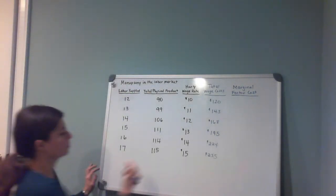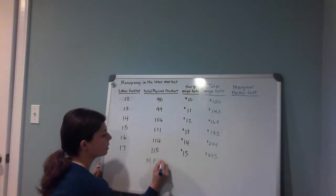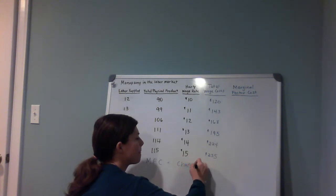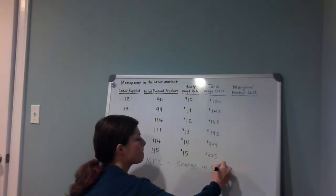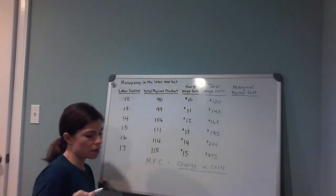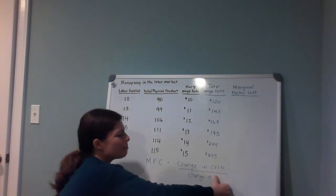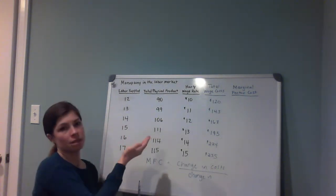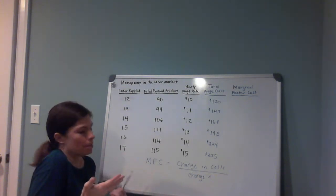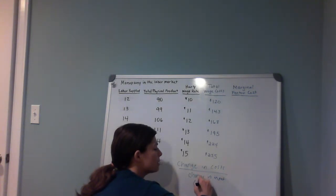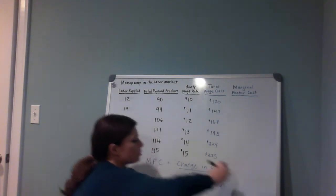To find marginal factor cost, the formula is the change in total costs divided by the change in the input — the change in the resource used, which is change in labor in this case. If it were something like flour, it would be the change in the amount of flour used.